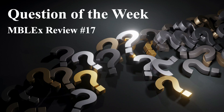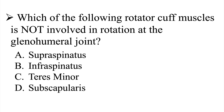Question of the week, MBLX review number 17. Our question is: which of the following rotator cuff muscles is not involved in rotation at the glenohumeral joint? Is it A, supraspinatus, B, infraspinatus, C, teres minor, or D, subscapularis?